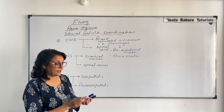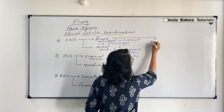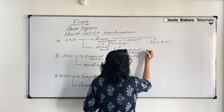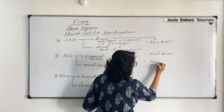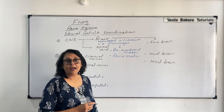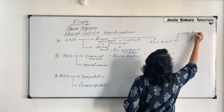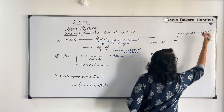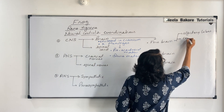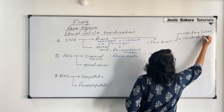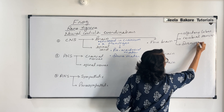The brain is divided into three parts: forebrain, midbrain, and hindbrain. The forebrain has three parts. First are the olfactory lobes — these are paired lobes and, as the name tells us, they help in the sense of smell. Then there are the cerebral hemispheres and the unpaired diencephalon. All these structures are very similar to what we have in our brain, but not as well developed.